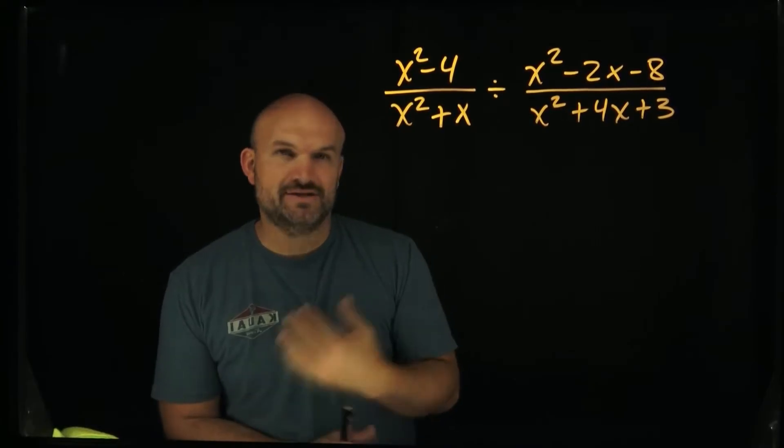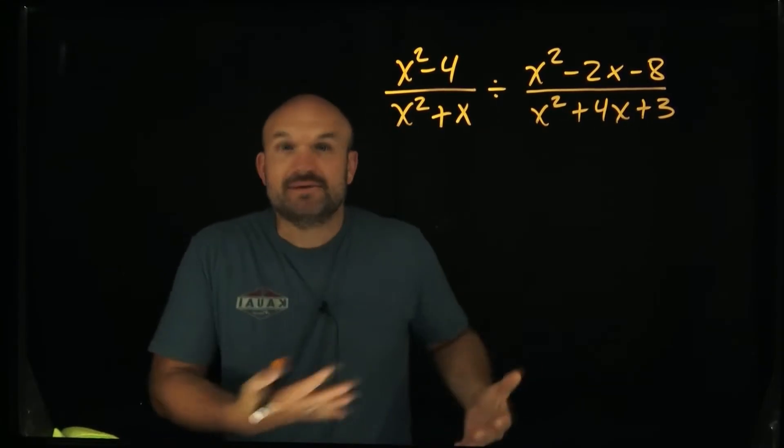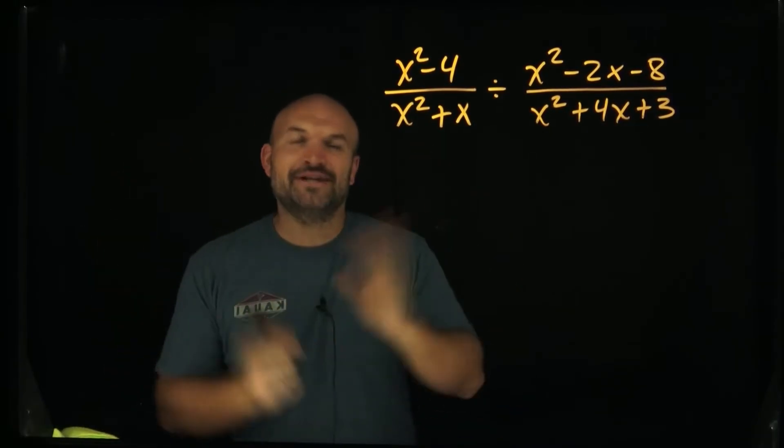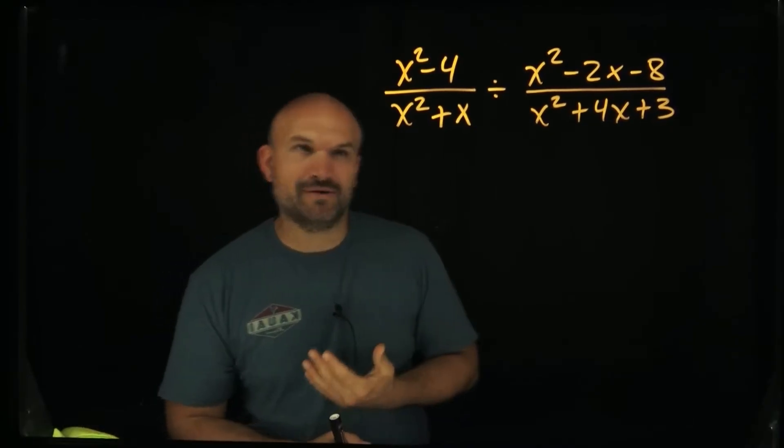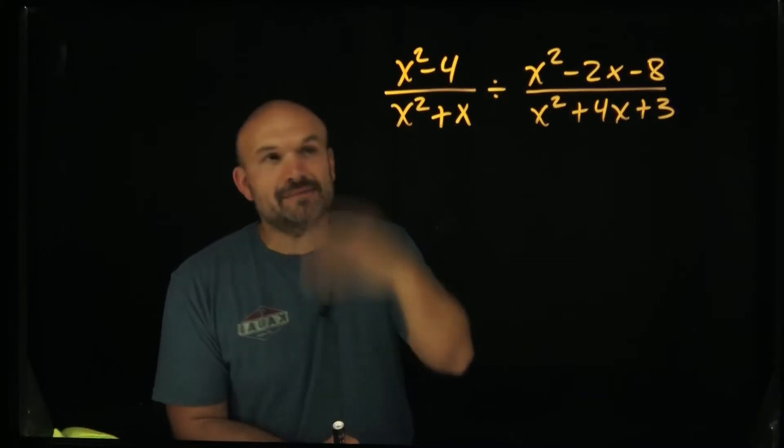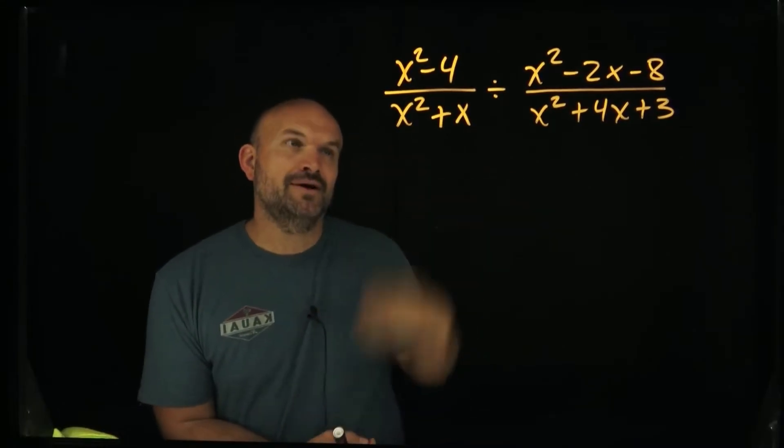Now when we're understanding excluded values, the one thing I always tell my students is you can't divide by zero. Just memorize that you cannot divide by zero, just get it ingrained in your brain. And a lot of students do pretty well with that. They're like alright, I know I can't divide by zero so whatever number I can plug in to make my denominator go to zero is not gonna work.